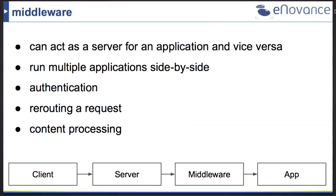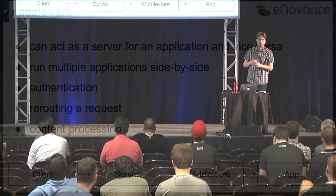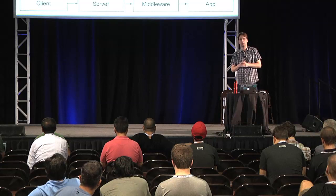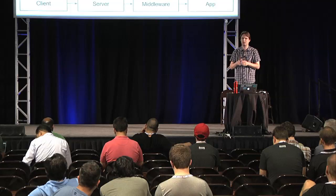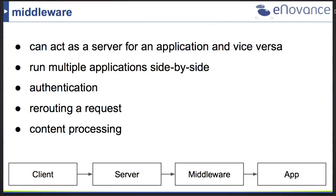If we want to extend our application, we can add a middleware. A middleware can act both as a server and as an application — the server calls the middleware, and the middleware itself also calls another application, acting as a server for it. You can run multiple middlewares side by side, which is useful for adding authentication, rerouting requests, or doing content processing. The client sends a request to the server, and the server calls the middleware and the application.